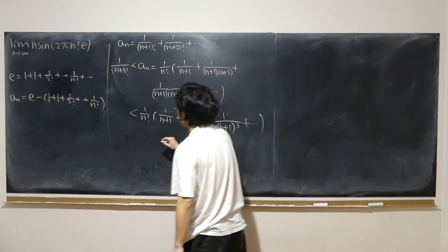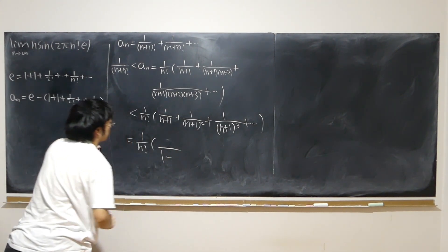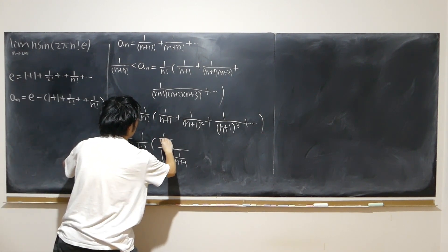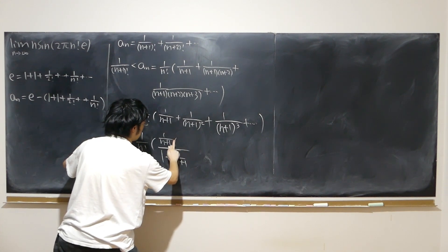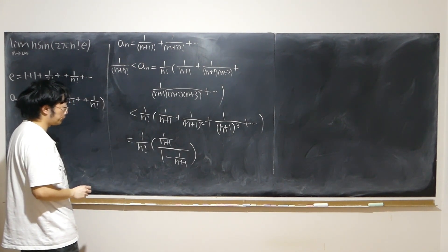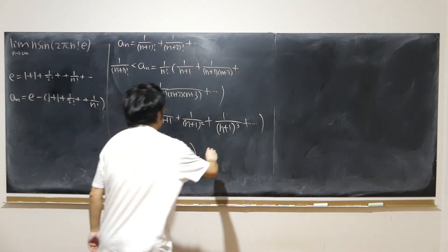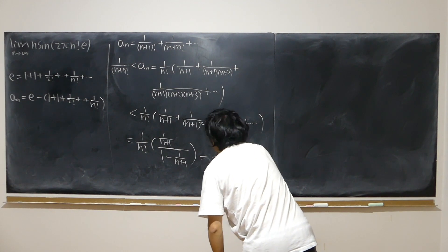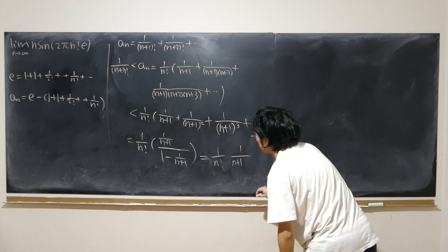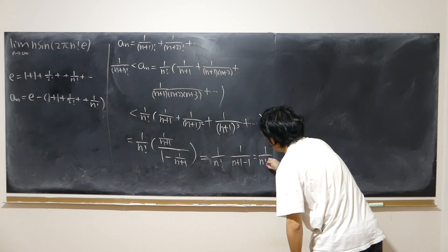That infinite geometric series equals 1 over n factorial times the first term 1 over (n+1), divided by 1 minus the common ratio 1 over (n+1). Multiplying top and bottom by (n+1), we get 1 over n factorial times 1 over ((n+1) minus 1), which is 1 over n factorial times 1 over n.